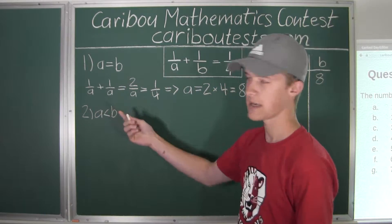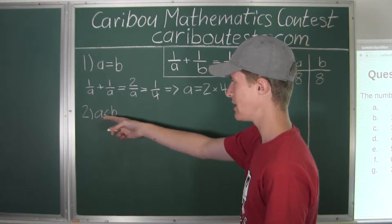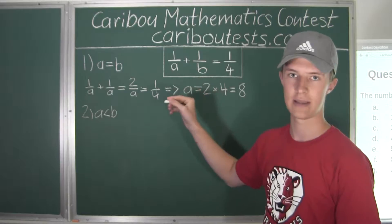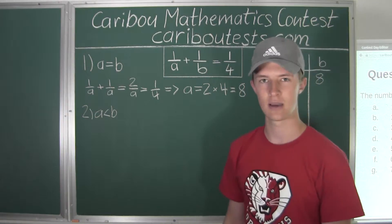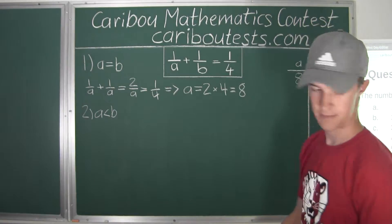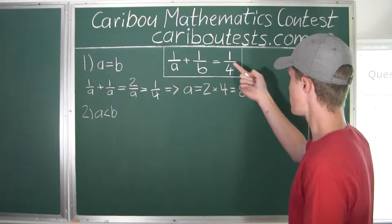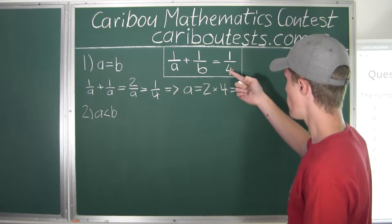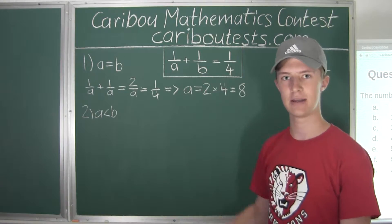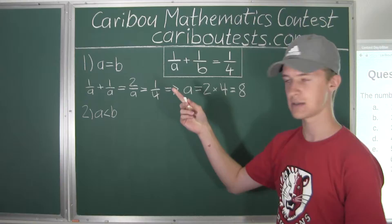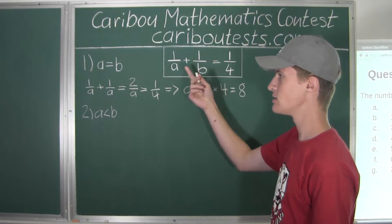We don't need to write b less than a, because 1/a + 1/b and 1/b + 1/a are the same thing. Any pair we get for a < b, we also write as (b, a), so we are counting all pairs. Now, what values could a have? If a is less than 4, then 1/a is already greater than 1/4, and adding 1/b won't work. Also, a can't equal 4. Therefore, a must be greater than 4.